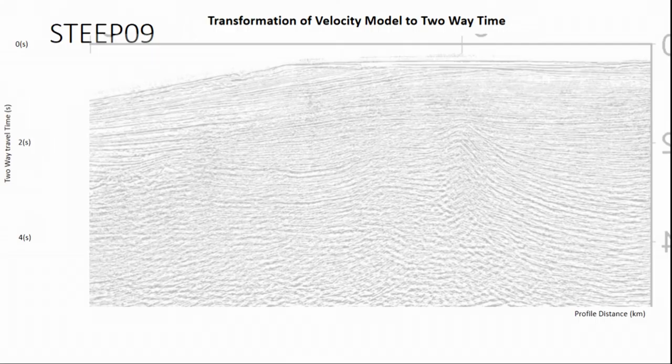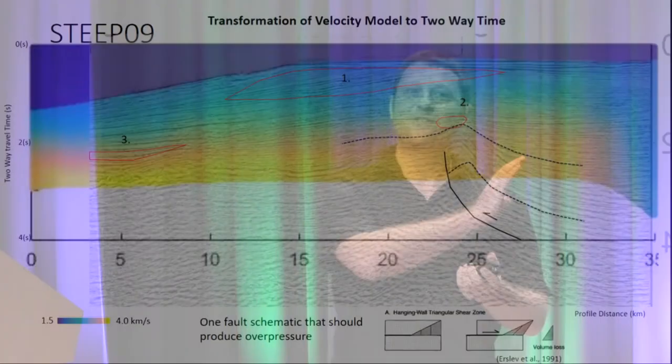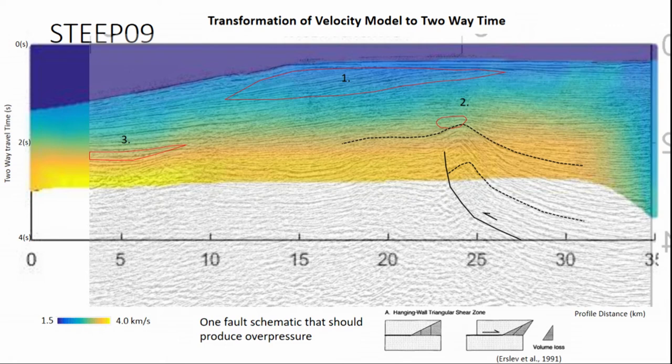We look at the seismic data, which is actually recorded in time, and overlay it. In order to overlay our velocity model in depth on a seismic line, we have to transform our velocity model to time, so our depth axis is actually time. Here are our three zones and how they line up with the seismic data. Zones one and three are probably simply related to burial, whereas zone two I think could be related to faulting. If you move things around in the subsurface and there's nowhere to go, you're just going to build up higher and higher fluid pressures, and we may see that result in our seismic lines.